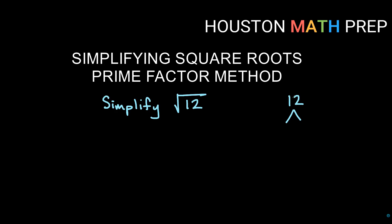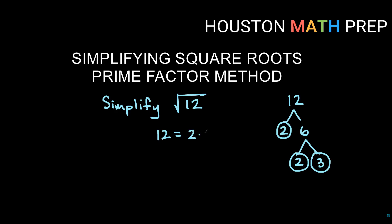For our first problem, if I want to simplify square root of 12, I'll simply create a factor tree and break 12 down. If I think of 12 as 2 times 6, I keep breaking down any branch that can go further. 2 is prime so we stop there. 6 can be broken down into 2 times 3, and both of those are prime. So 12 equals 2 times 2 times 3.